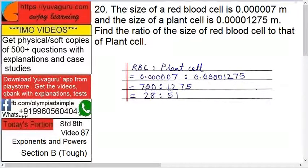Go on minimizing this, means reducing this. Divided by 25 you get 28, divided by 51. This can't be divided further. This is the required ratio.